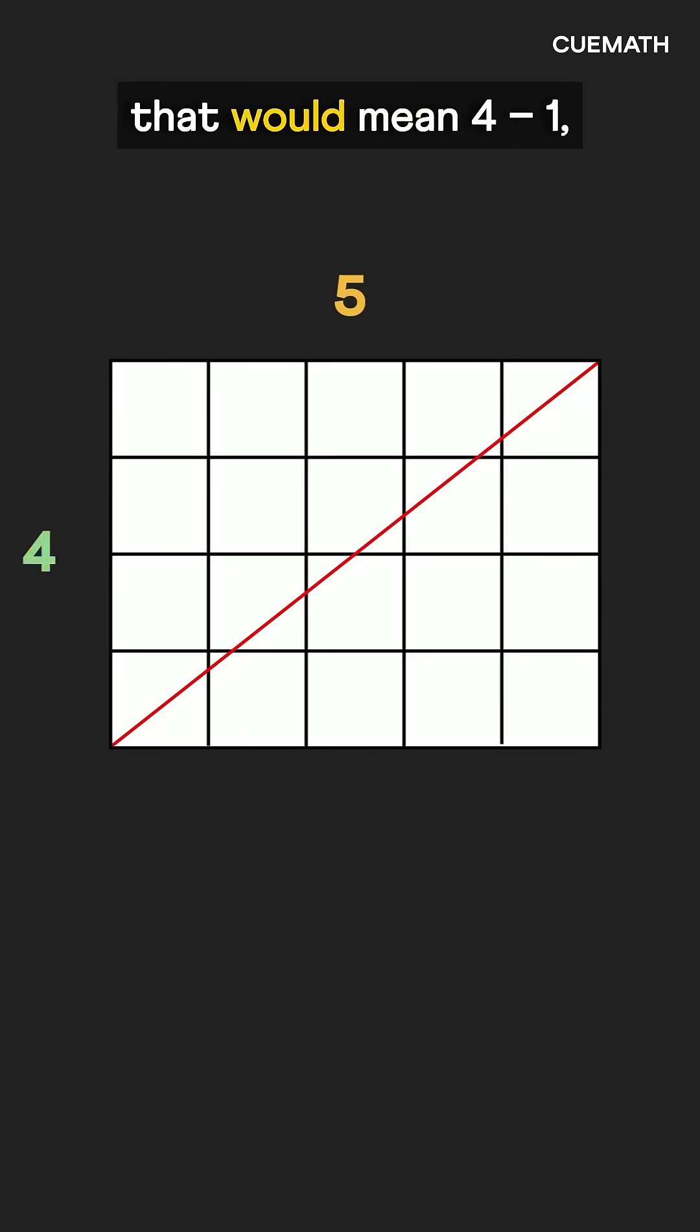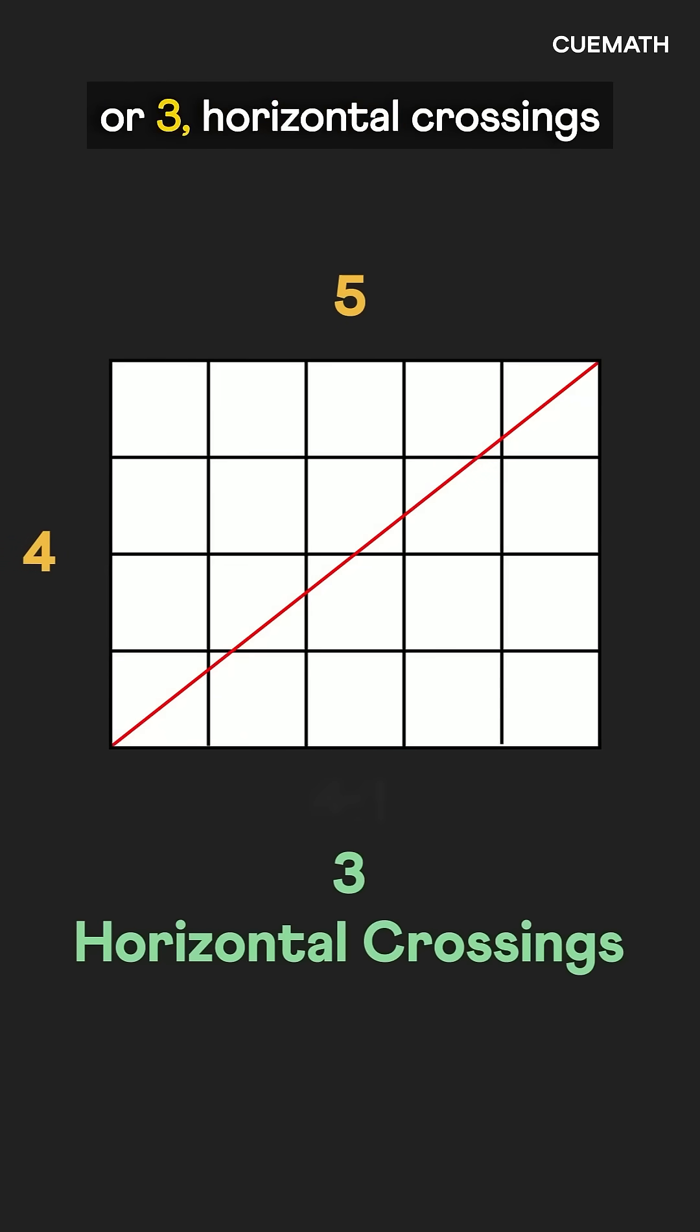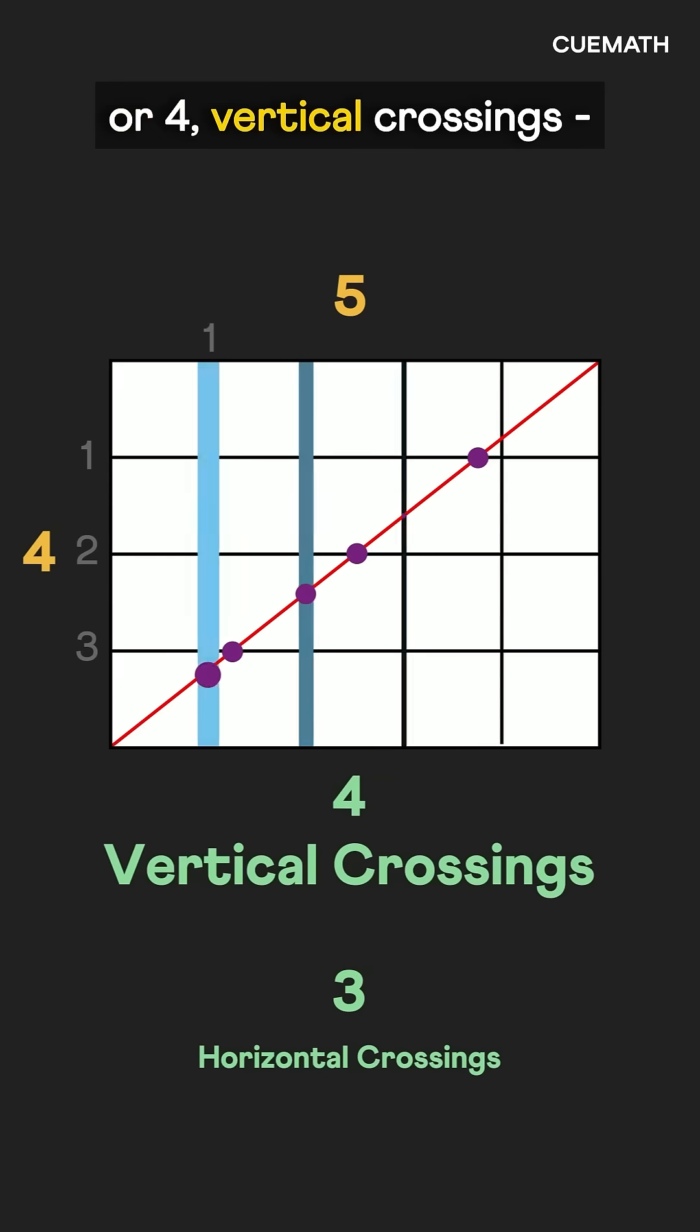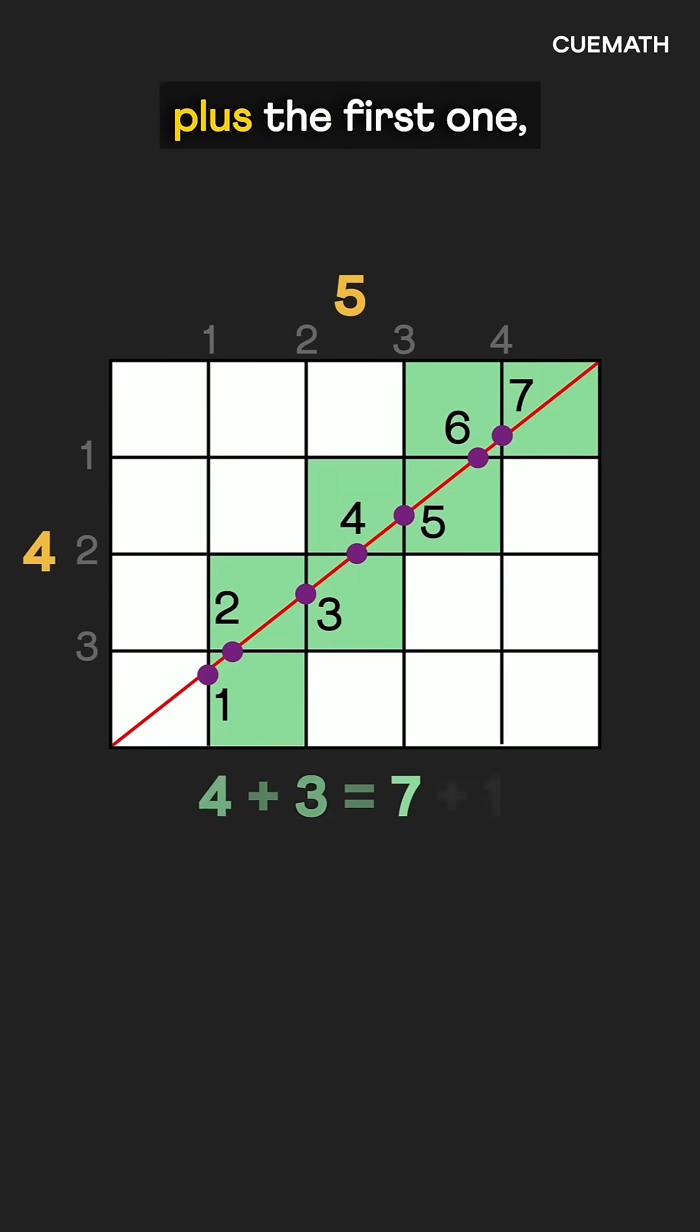For a 4 by 5 rectangle, that would mean 4 minus 1 or three horizontal crossings, and 5 minus 1 or four vertical crossings. So seven squares plus the first one, a total of eight squares.